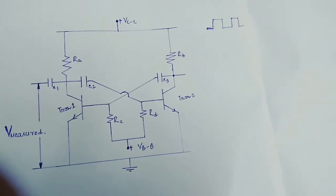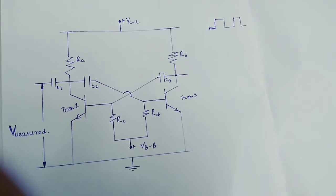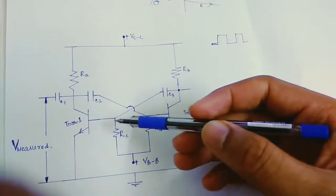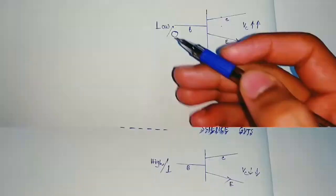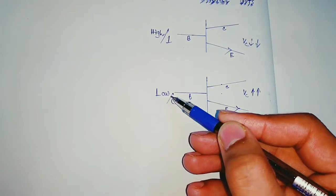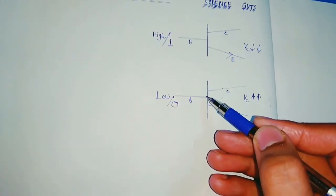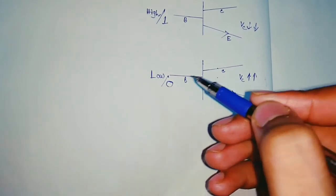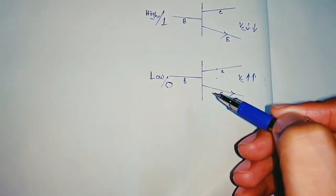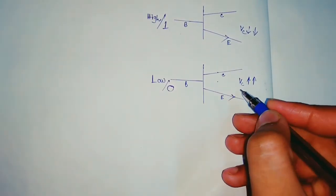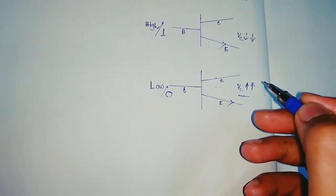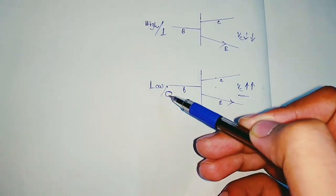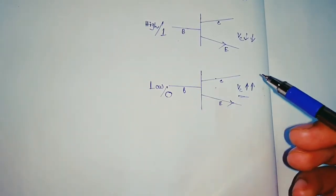No stable state — that is what we get from an astable multivibrator. And why does this happen? If we consider this diagram, we can see there are two amplifiers, or transistors — transistor one and transistor two. In the case where we give a low voltage or a zero to the base of a transistor, it readily goes to the cutoff region. The cutoff region means it will go to an open circuit, so no conduction will occur. Therefore, the collector voltage VC will start increasing.